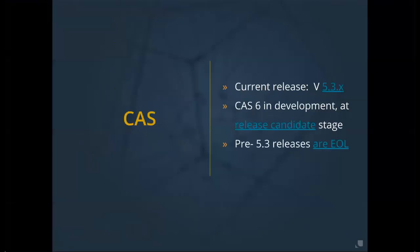Moving to CAS: the current release is 5.3.5, with 5.3.6 coming. This is an easy upgrade from 5.2, 5.1, 5.0, and earlier 4.x versions. CAS 6 is in development as a major release requiring a new overlay. Pre-5.3 releases are end-of-life from the community standpoint — the 5.2 series will only receive security patches until November 27, 2019. Unicon will support clients at any CAS version as best they can.